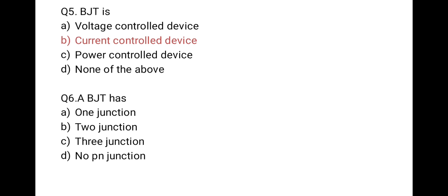The next question is: a BJT has — first option, one junction; second option, two junctions; third option, three junctions; last option, no PN junction. In BJT there are two junctions: first, the emitter-base junction, and second, the collector-base junction. So the correct option is second, two junctions.